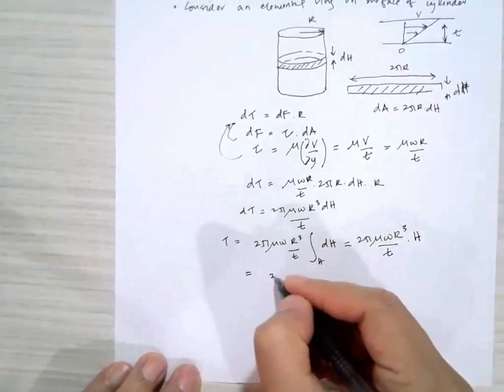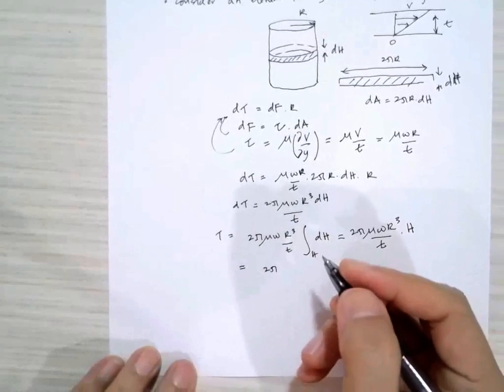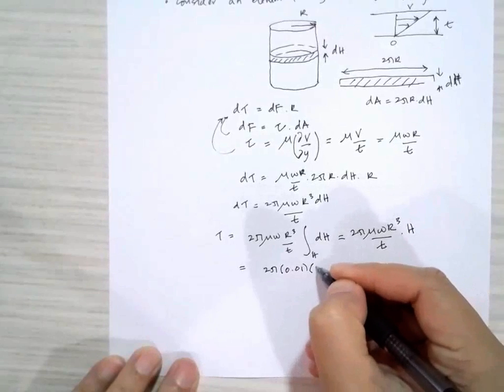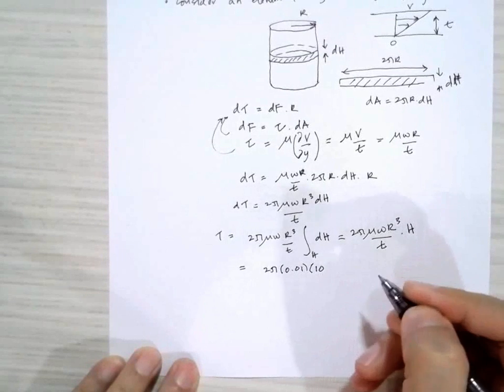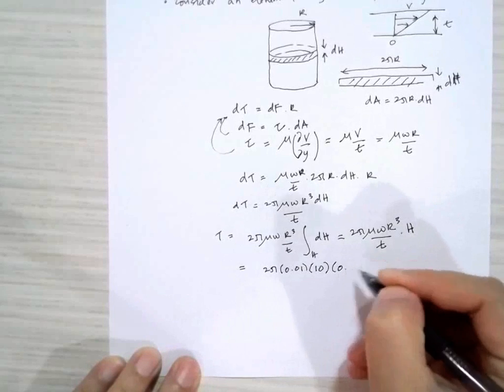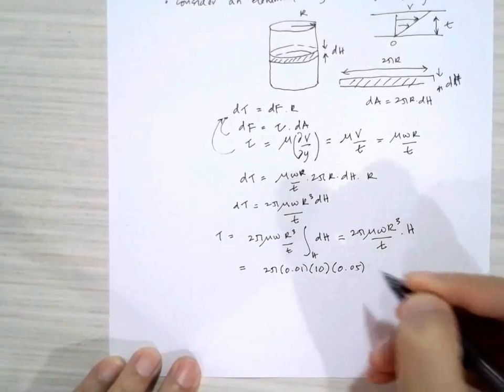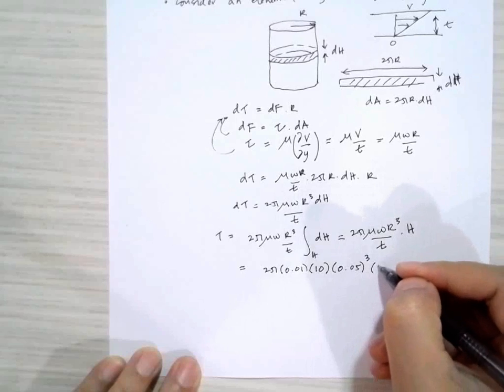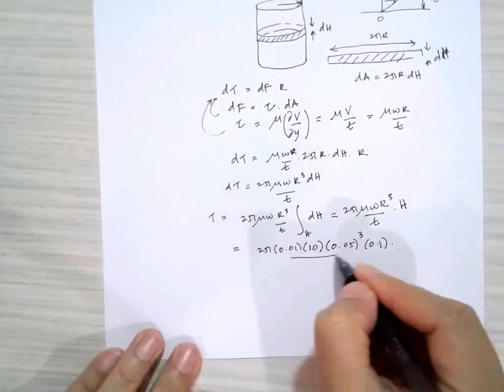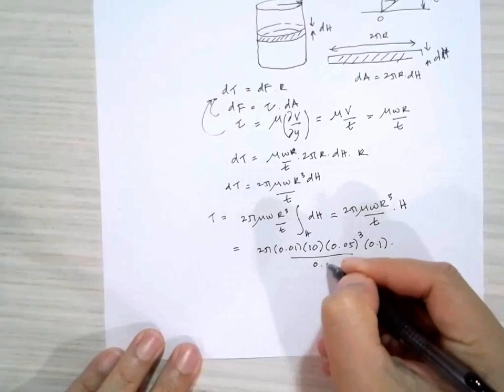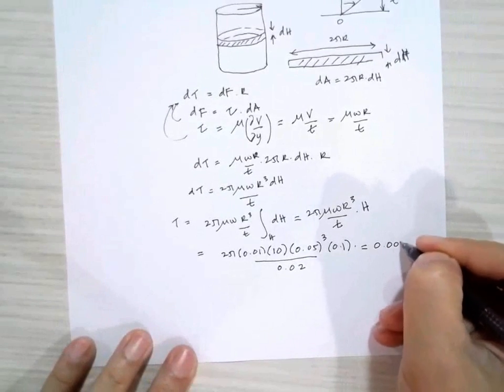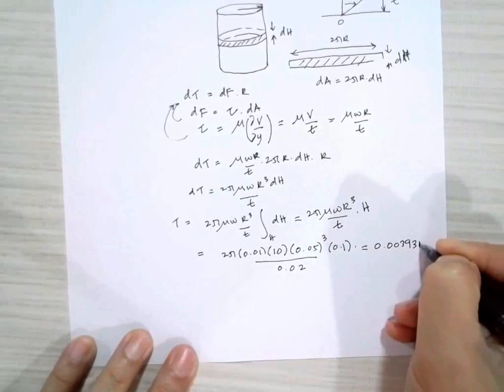Substituting the values: 2π times 0.01 times 10 times 0.05³ times 0.01 divided by 0.02, which gives 0.00393 newtons. That's the torque.